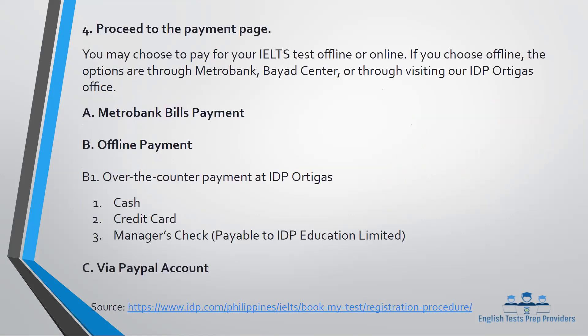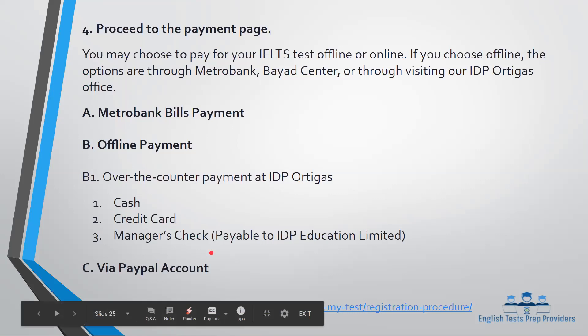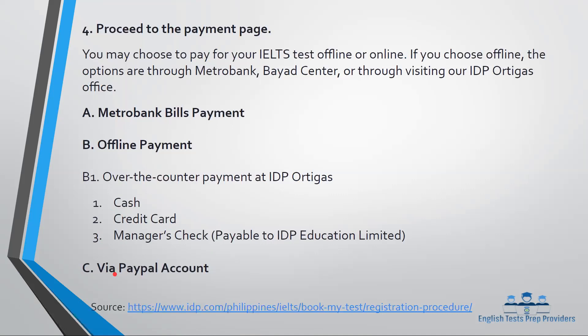After completing the registration step, you will proceed to the payment page. You can pay via Metrobank bills payment, offline or over-the-counter payment at your nearest IDP branch by cash, card, or manager's check. You can also pay via PayPal. Make sure that you pay the correct amount depending on the test format you are taking.